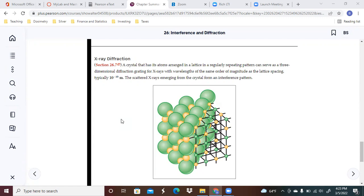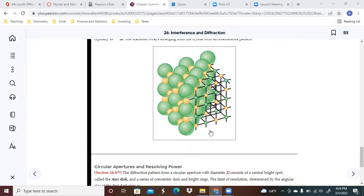So this is going to serve as a lattice that is going to have the ability to produce the same effect as a diffraction grating like we saw in the last section. And the distance here is going to be about 10 to the minus tenth meter. So pretty small. So the scattered X-rays emerging from the crystal form an interference pattern.